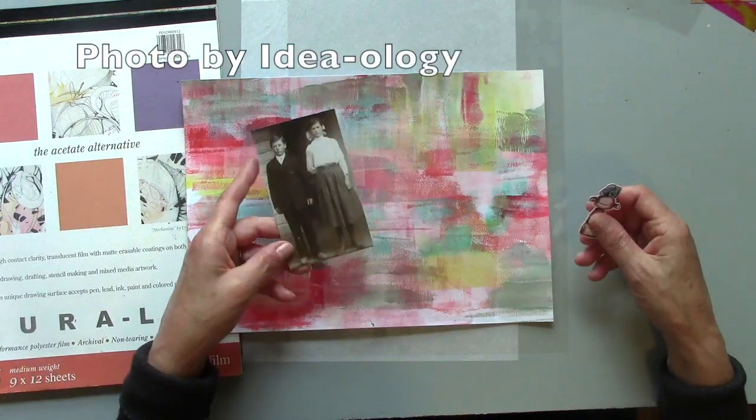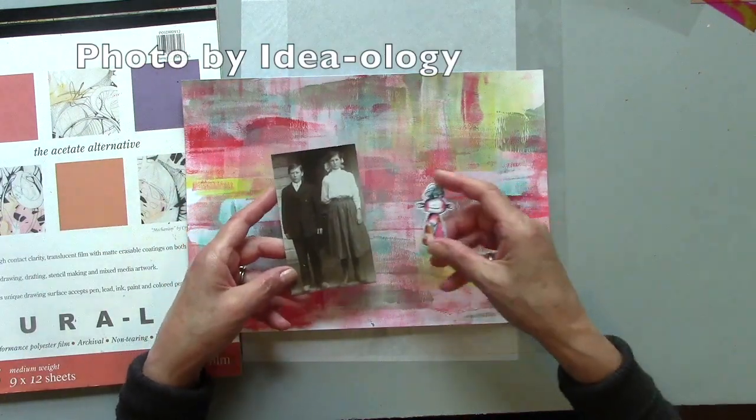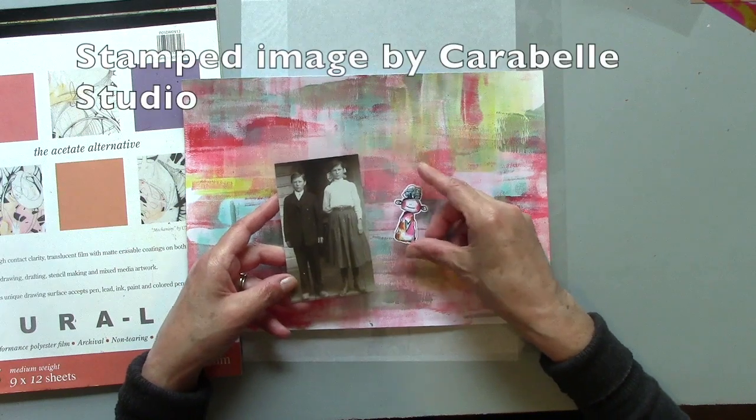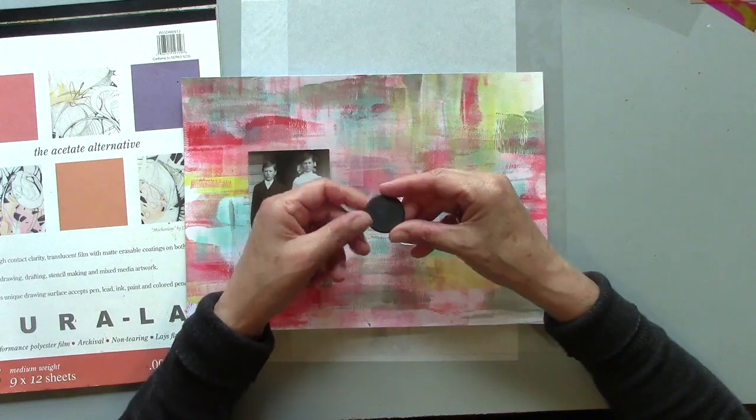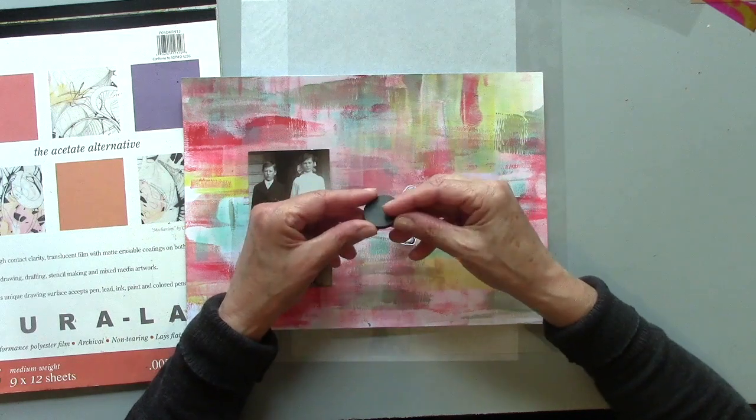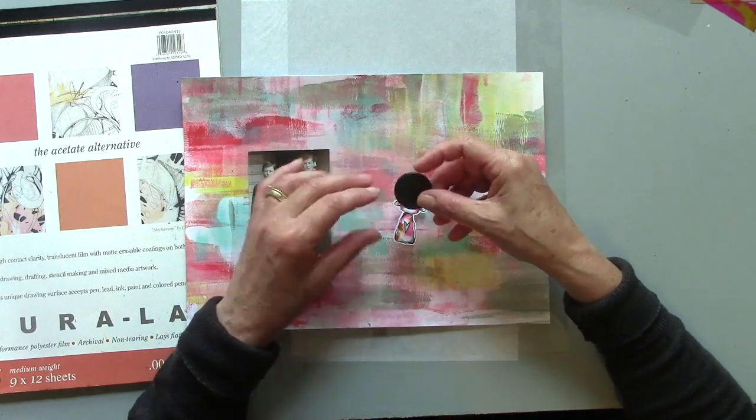I've gathered up a few extras, some collage pieces, some little stamped images, and I've got a magnet ready for my magnetic name card which is going to be right on the front of the journal.